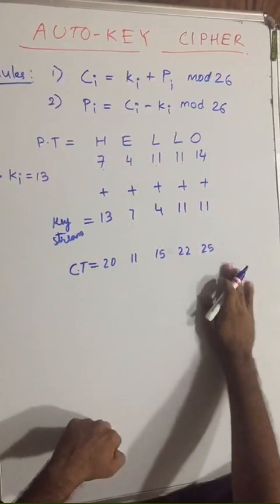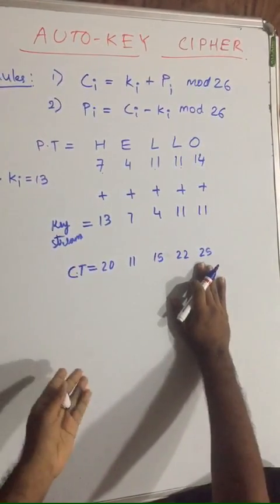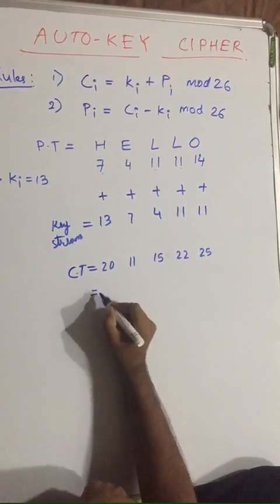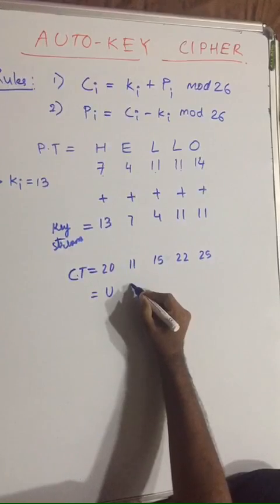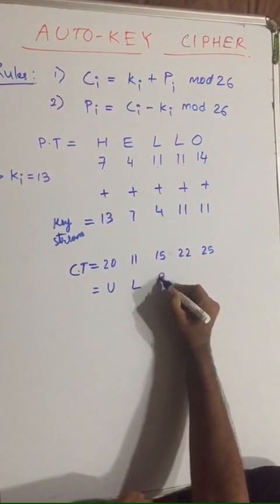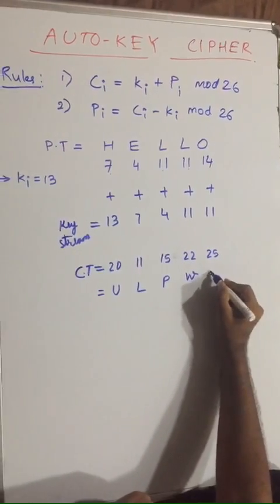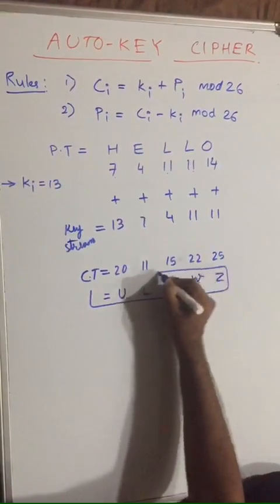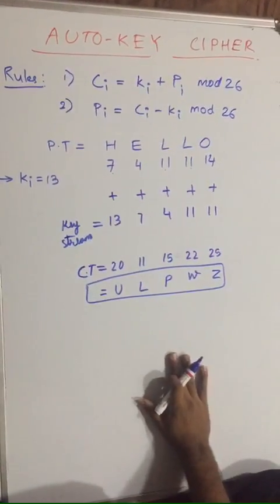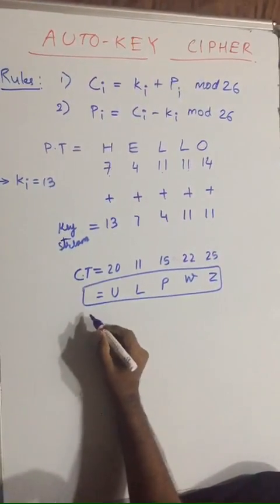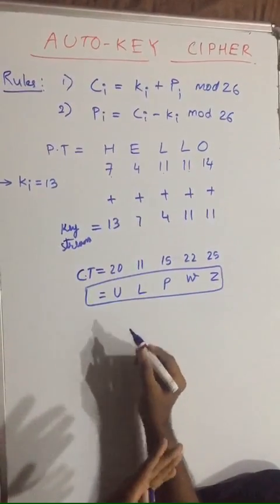These five values are the ciphertext values, and we would have to write the corresponding alphabets to it. So the ciphertext would be equal to: 20 is for U, 11 is for L, 15 is for P, 22 is for W, and 25 is for Z. So this is our ciphertext for HELLO using auto-key. Now if you want to again gain the plaintext, you just simply have to subtract the key stream from the ciphertext.